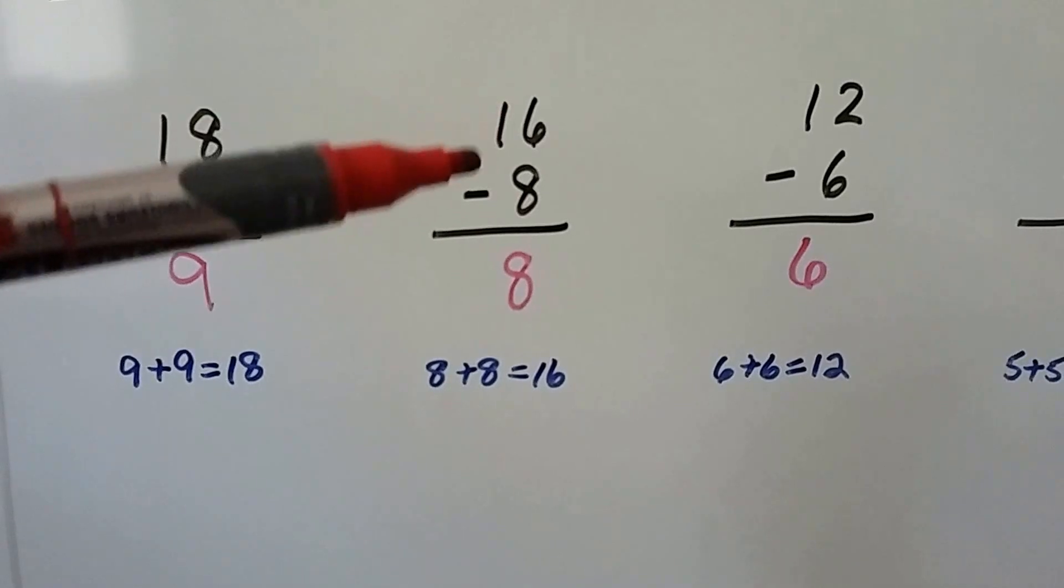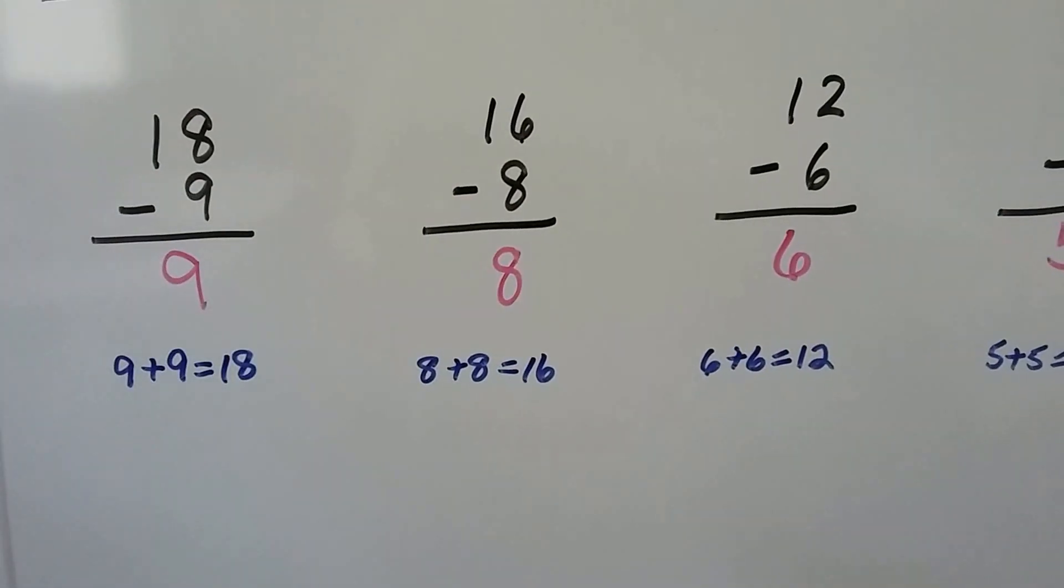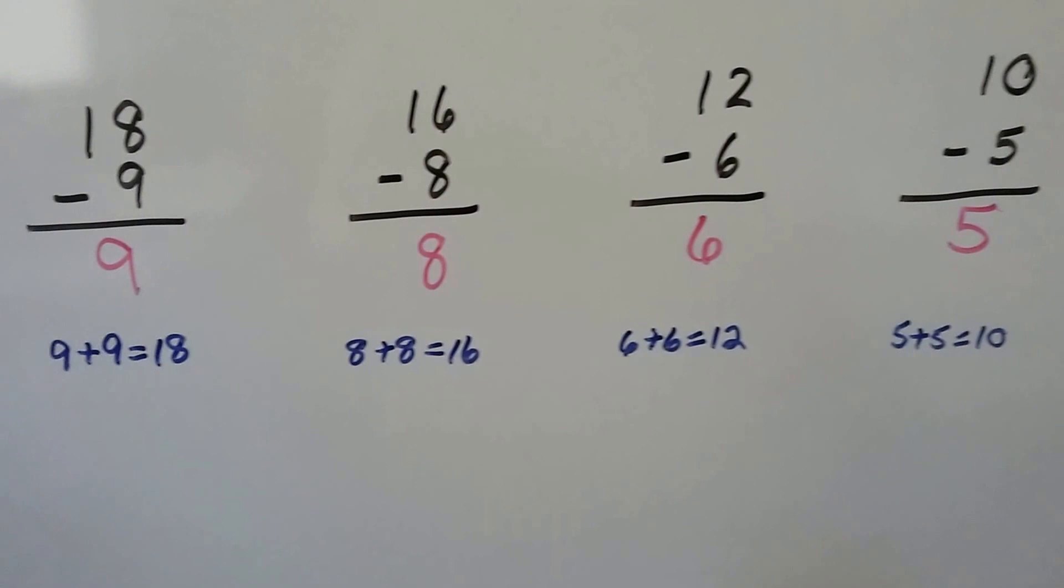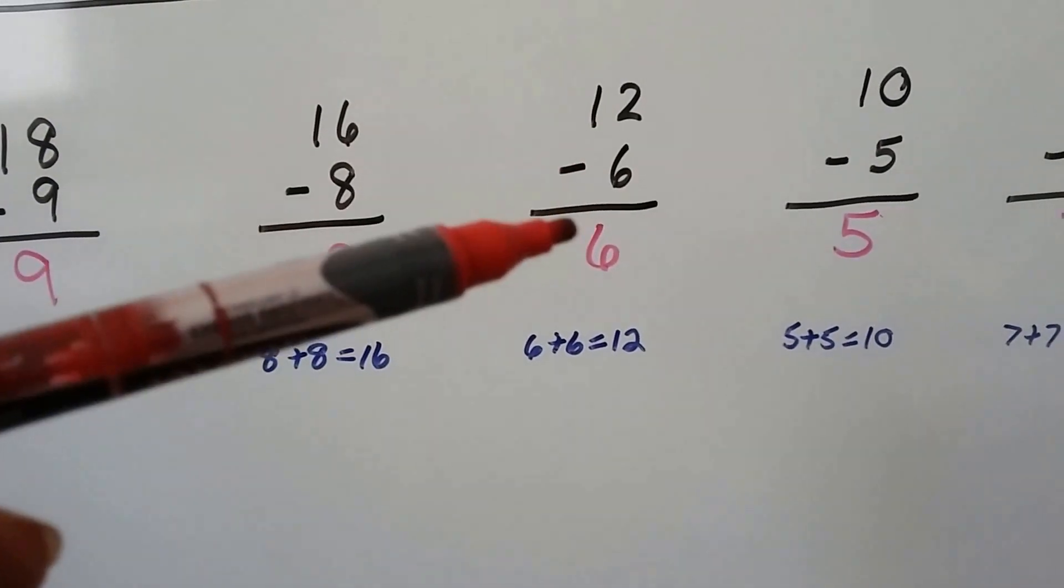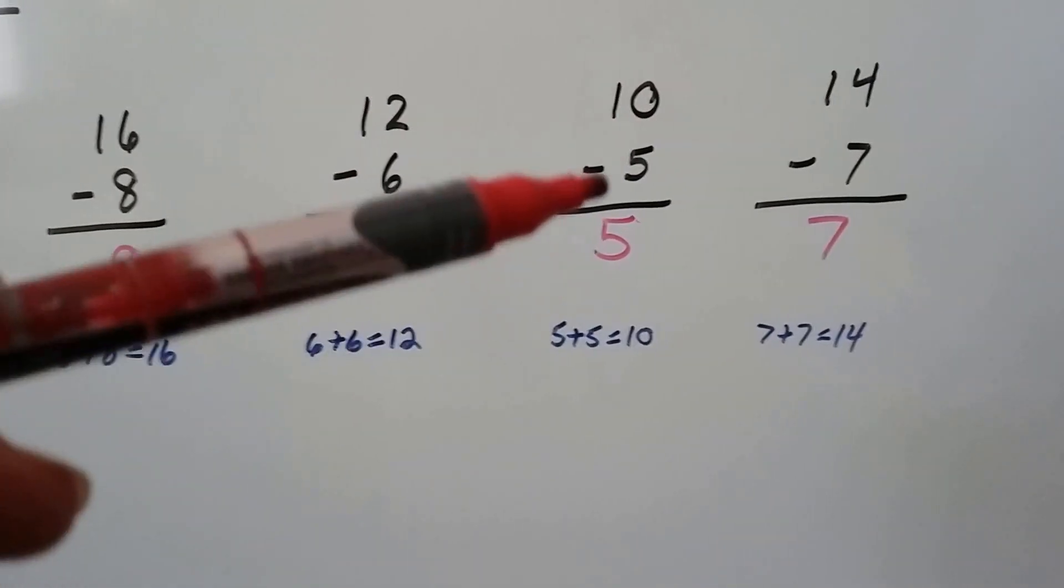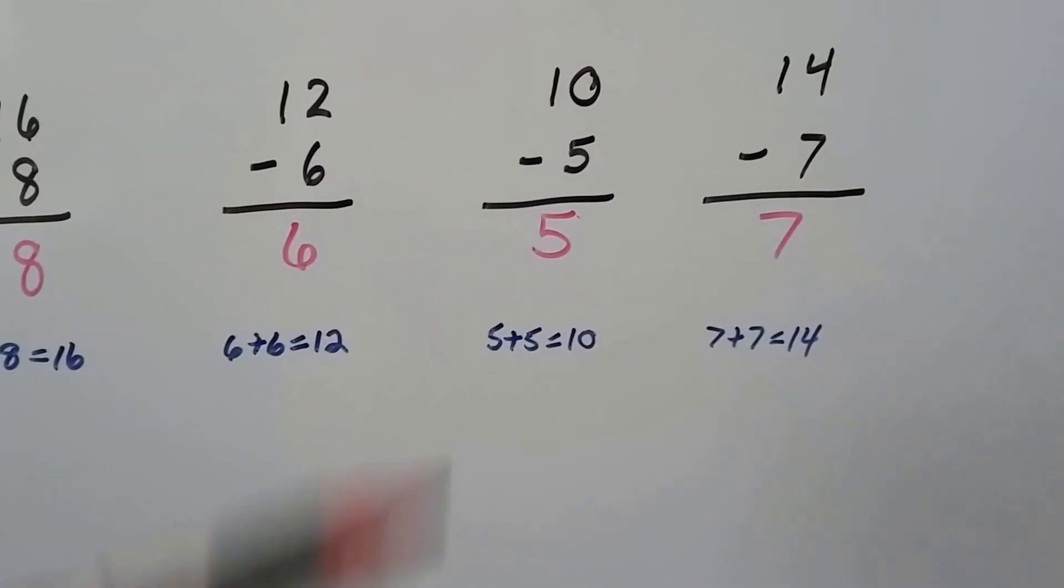6 plus 6 is 12, so the missing difference is 6. 5 plus 5 is 10, the missing difference is 5.